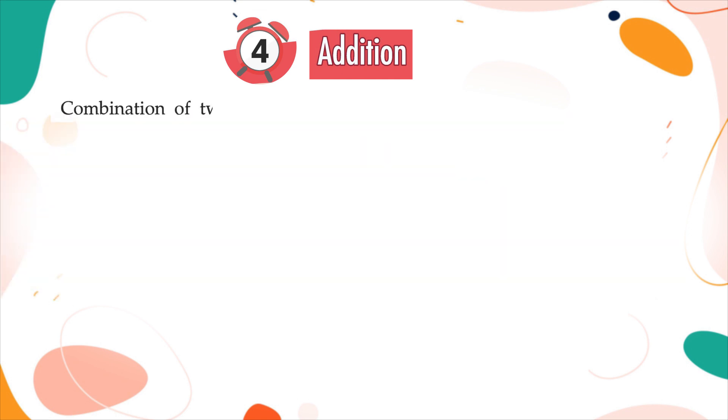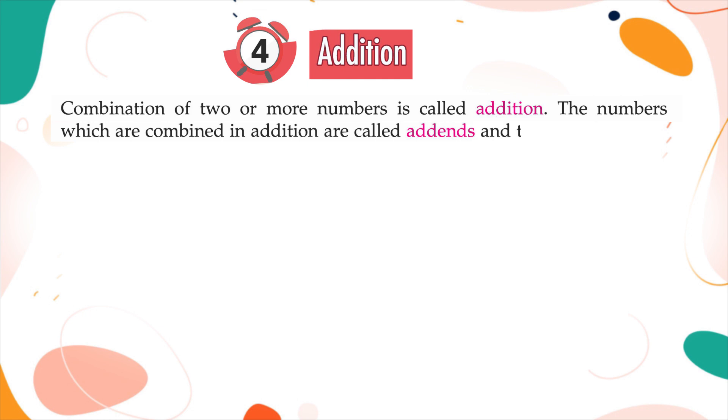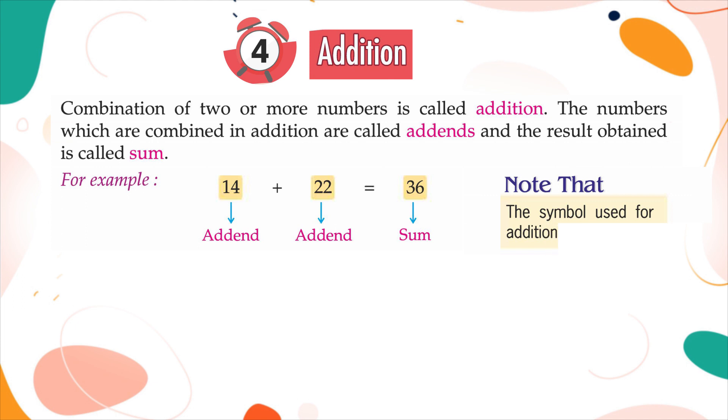Combination of two or more numbers is called addition. The numbers which are combined in addition are called addends and the result obtained is called sum. For example, 14 addend plus 22 addend is equal to 36 sum. Note that the symbol used for addition is plus.